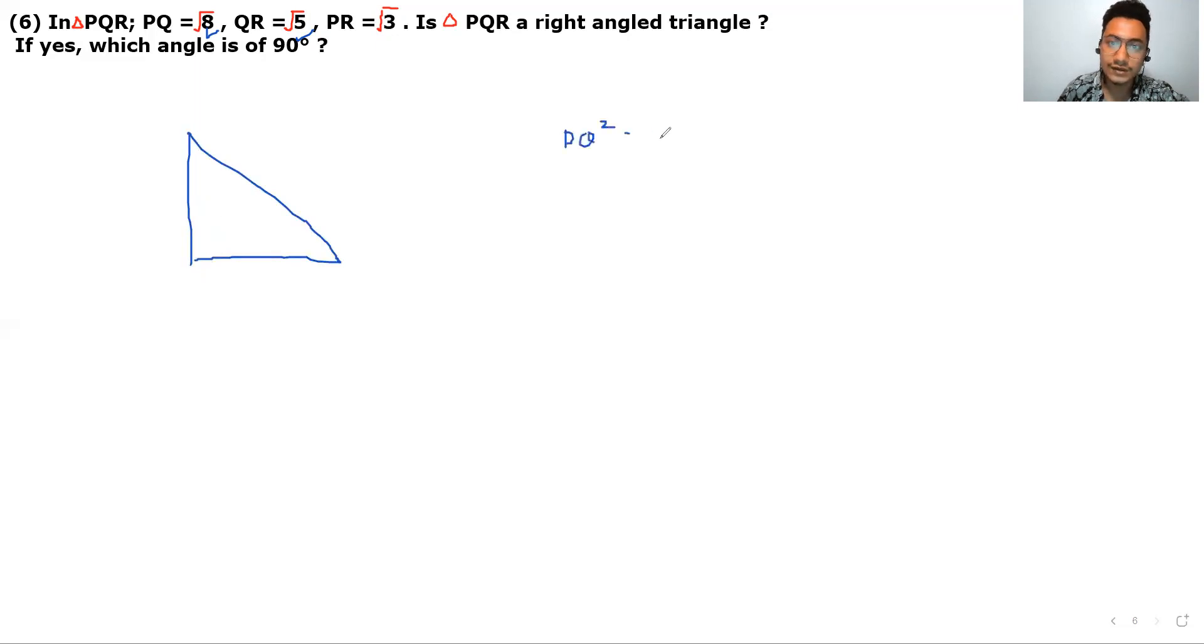Now PQ square is equals to root 8 square, which is 8. Then QR is 5 and PR is 3. Now PQ value is 8, and QR value is 5 and PR is 3. This value is 5 and 3. Now when we add the two, then it will be 8. That means it's a right angle triangle. Converse of Pythagoras. Yes, it is a right angle triangle and angle Q is 90 degrees.